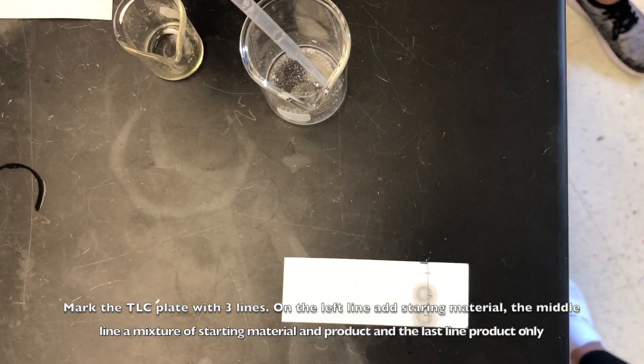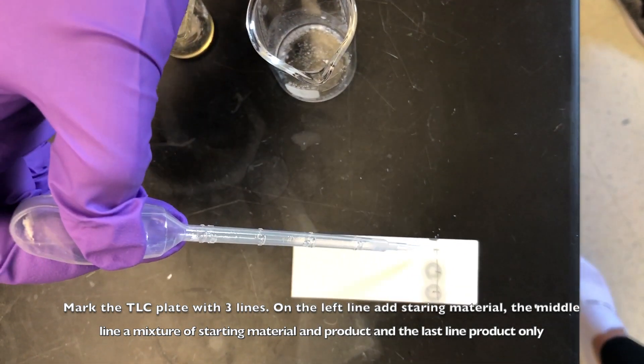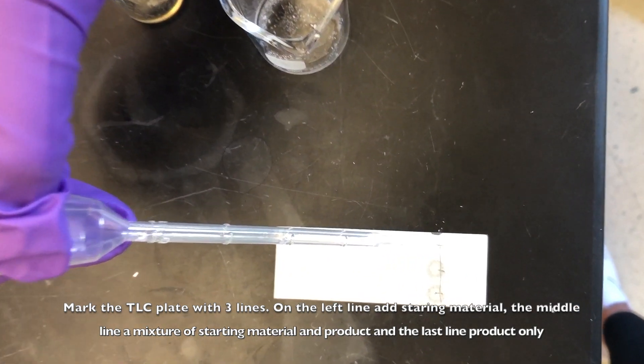Mark the TLC plate with 3 lines. On the left line, add the starting material. The middle line, a mixture of the starting material and the product. And the right line, only the product.